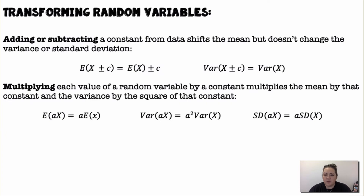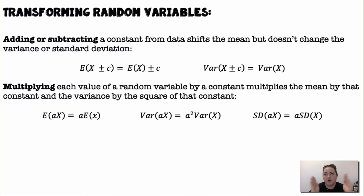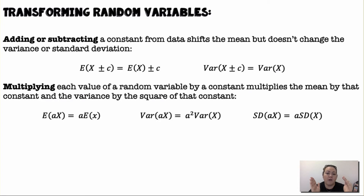We can transform random variables by adding, subtracting, multiplying, or dividing a constant. If I add or subtract a constant, it shifts the data over and affects the mean by whatever that constant is — if I add 5, my mean increases by 5. But because I'm just shifting the data, it doesn't get more spread out, so variance and standard deviation are unaffected by adding or subtracting a constant.